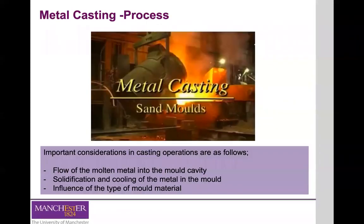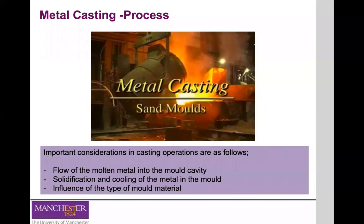The casting process is quite simple in general: it normally involves the melting of a metal, which is then poured into a mold where we have the negative of the part we want to build. Once the molten metal is injected into the mold, it starts to solidify, and once solidified, we can remove it from the mold and obtain our final part. There is, however, much more to the casting process that we need to take into consideration.